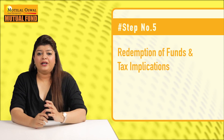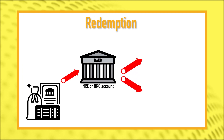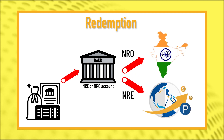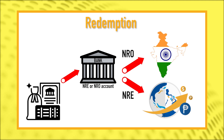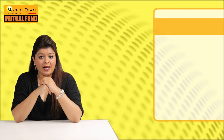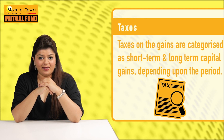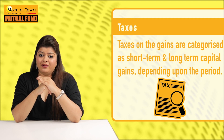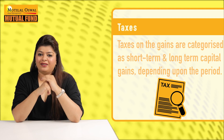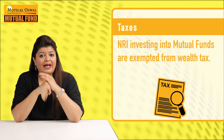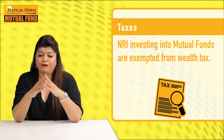Step 5: Redemption of Funds and Tax Implications. The redemption process is very simple. The mutual fund company will remit the principal and the gains after TDS deduction, if applicable, to the designated account. If this designated account is an NRE account, which is a repatriable account, then the funds can be transferred to your country of residence. Taxes applicable on the gains are categorized as short-term or long-term capital gains depending upon the period, and the slabs and rates are decided as per the type of the mutual fund. Please note that NRIs who invest in mutual funds are exempted from wealth tax.